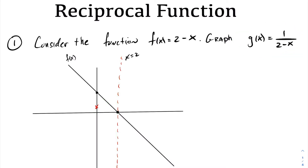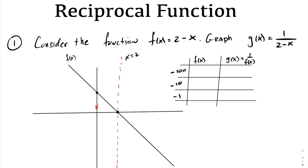What happens as we approach this vertical asymptote? The function f(x) is a decreasing function — as we read the graph from left to right, it's going downwards. Therefore, the reciprocal function will be an increasing function. Let's look at the following table to examine what happens to the reciprocal function as we approach the vertical asymptote at x equals 2 from the left-hand side.